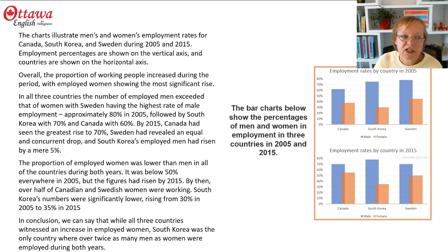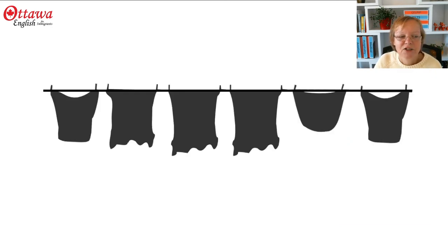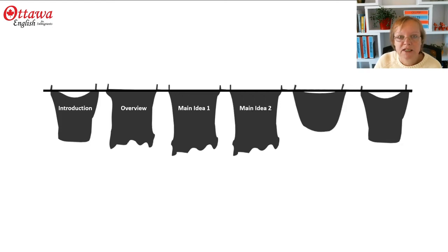So we're going to take a look at the components that make up this presentation. The first thing we need is an introduction, then we need an overview, then we need two main ideas, a conclusion, and, sprinkled throughout, nice sentence variety.